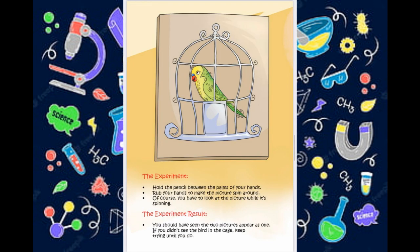The experiment. Hold the pencil between the palms of your hands. Rub your hands to make the picture spin round. Of course, you'll have to look at the picture while it's spinning.